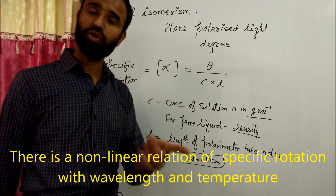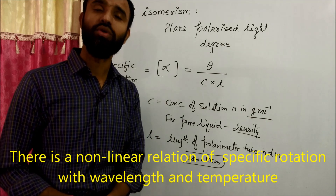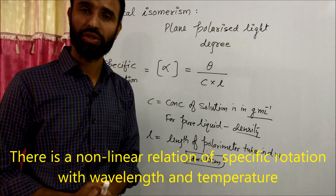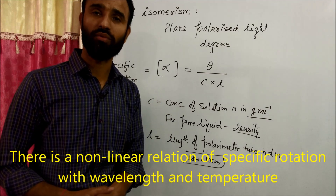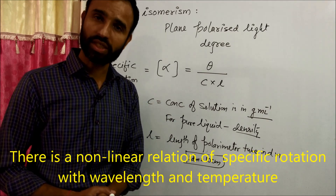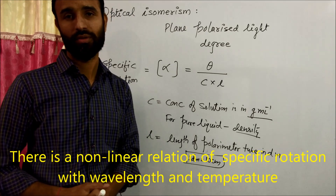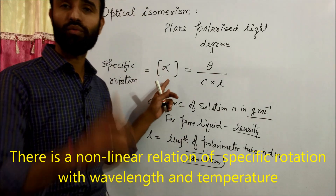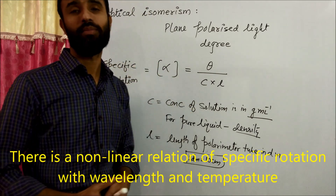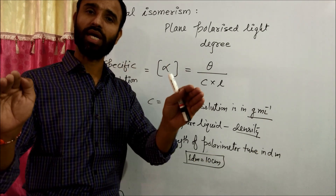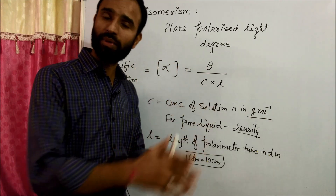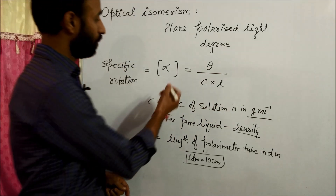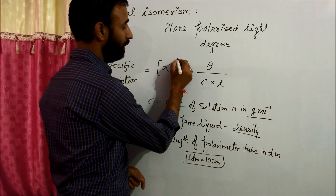Specific rotation also depends upon the wavelength of the light used. Normally we use sodium light — the D line of sodium at 589.6 nm — and temperature. So do remember, it also depends upon wavelength and temperature. But since we fix wavelength and temperature, we will not write them explicitly in the expression. So normally we write it as D25.